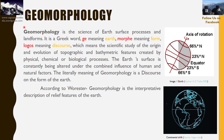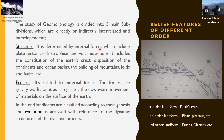The study of geomorphology is divided into three main subdivisions: structure, processes, and evolution. Structure refers to how the earth is formed — including plate tectonics, diastrophism, volcanic actions, and the formation of continents, ocean basins, and mountains. Processes refer to the forces like gravity and human or natural interventions. Evolution is analyzed with reference to these dynamic structures and processes.